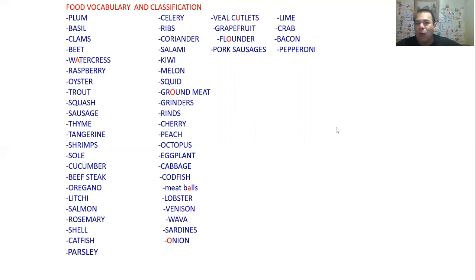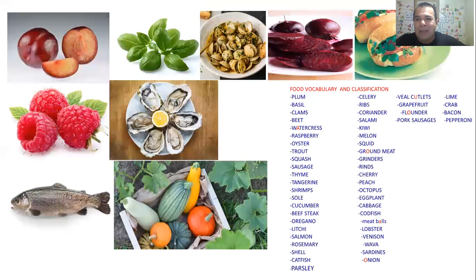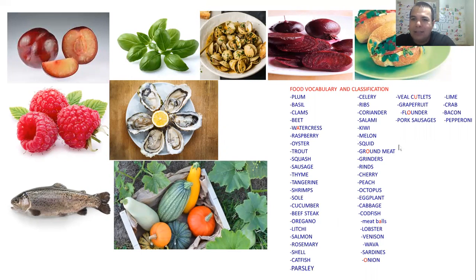So guys, basically this is the list, and what we're going to do today is identify and then classify it. The second part is identifying the vocabulary from the list. If you see here in this corner we have the vocabulary, and all around we have different pictures corresponding to each word. Number one is plum — this one right here.